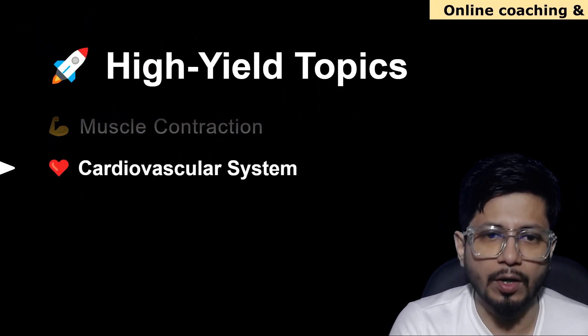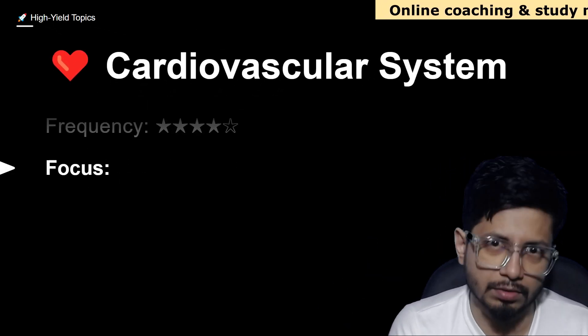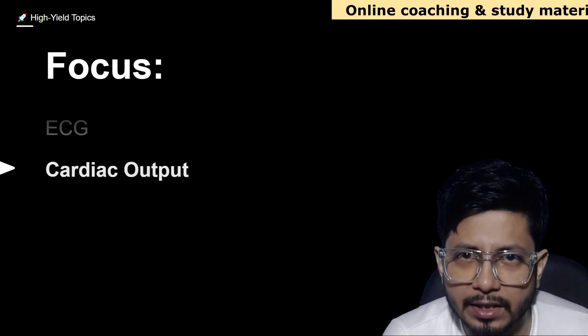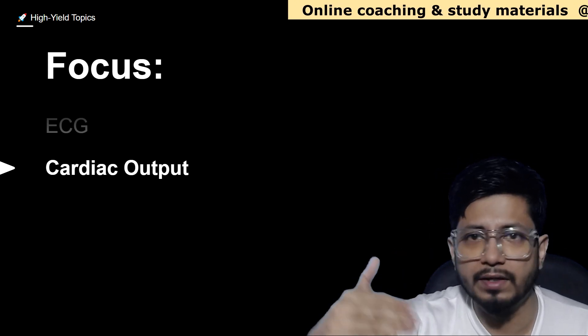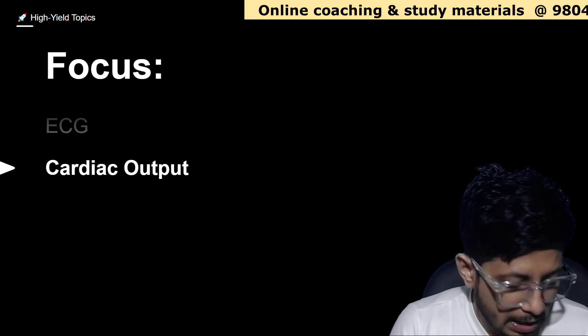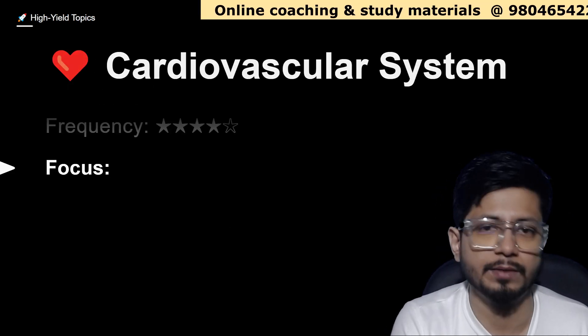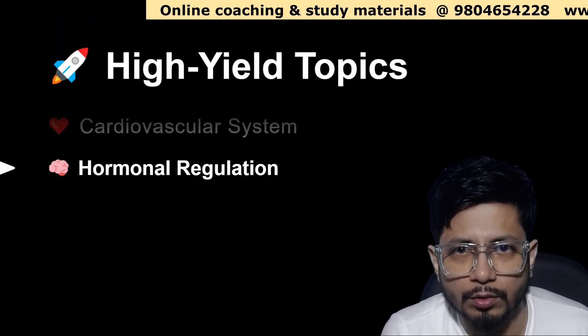The third topic is cardiovascular system. In cardiovascular system, frequency is 4 star out of 5, which is also very good in terms of the question paper. ECG electrocardiograph, ECG PQRST different sections of the ECG are important, what they signify is important. Cardiac output is an important topic. Blood pressure regulation is another important topic from cardiovascular system.